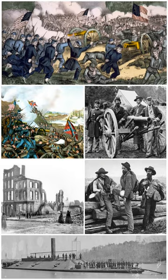On December 18, 1860, the Crittenden Compromise was proposed to reestablish the Missouri Compromise Line by constitutionally banning slavery in territories to the north of the line while guaranteeing it to the south. The adoption of this compromise likely would have prevented the secession of every southern state apart from South Carolina, but Lincoln and the Republicans rejected it. It was then proposed to hold a national referendum on the compromise, which the Republicans again rejected, although a majority of both northerners and southerners would have voted in favor of it. A pre-war February peace conference of 1861 met in Washington, proposing a solution similar to the Crittenden Compromise; it was rejected by Congress. Nonetheless, the remaining eight slave states rejected pleas to join the Confederacy following a two-to-one no vote in Virginia's first secessionist convention on April 4, 1861.